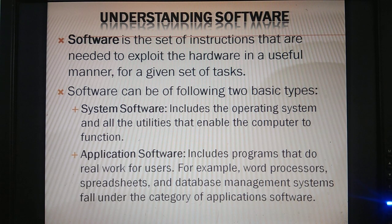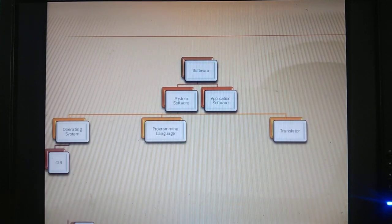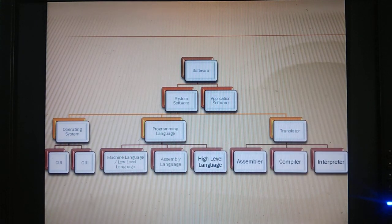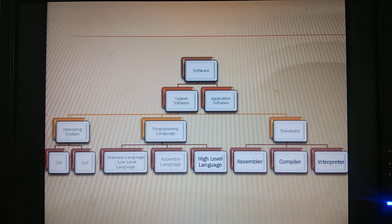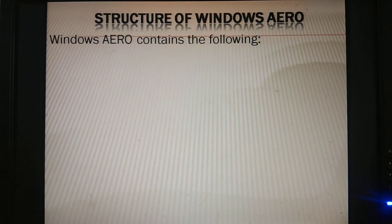System software includes operating systems. Application software includes applications which we use for special purposes, like MS Word, spreadsheet, PowerPoint, etc. Software is divided into system software and application software. System software is divided into three parts: operating systems, programming language, and translator. Operating systems include CUI — character user interface — and GUI — graphical user interface. Programming languages include machine language, low level language, assembly language, and high level languages. Translators include assembler, compiler, and interpreter, which translate our data.